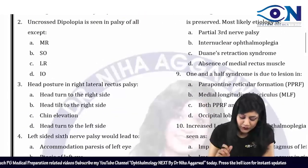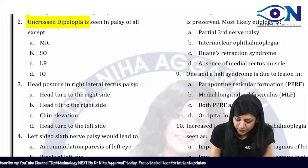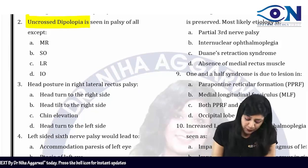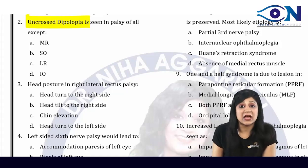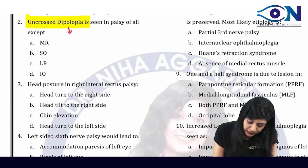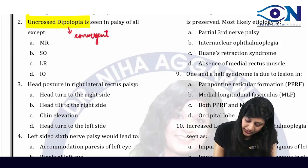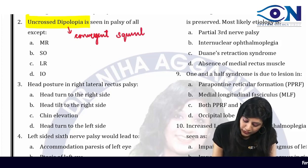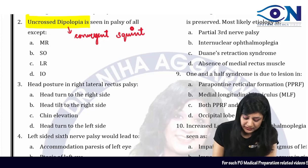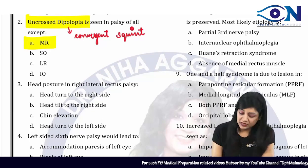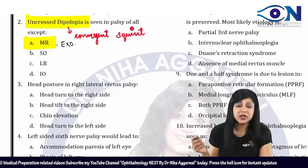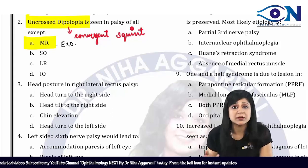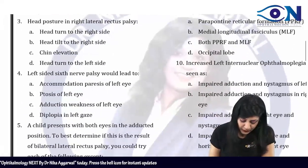Number 2: we have uncrossed diplopia. Now uncrossed diplopia is seen in all except which one? Uncrossed means you should have the convergent squint. So all of the following will give you convergent squint except the medial rectus, because medial rectus is going to give you exotropia. So the answer to this question will be A.